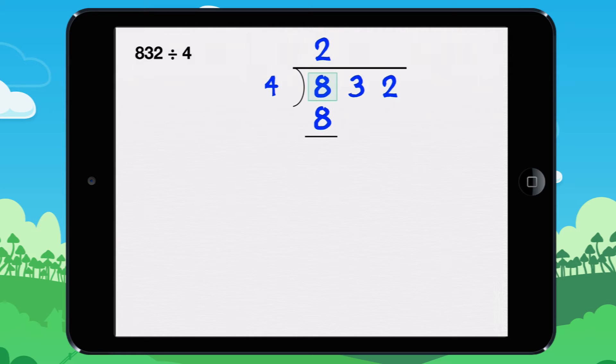We need to find the remainder. 8 minus 8 equals 0. The remainder is 0.